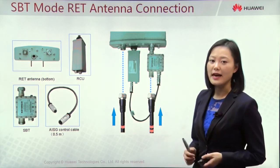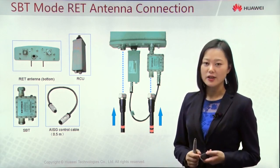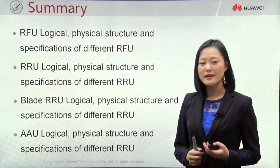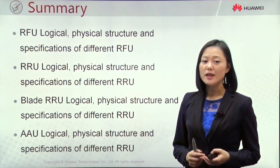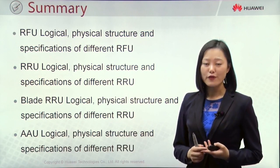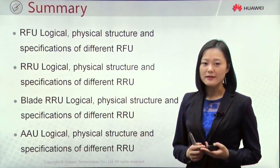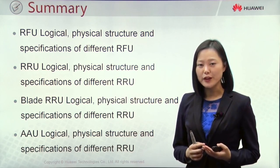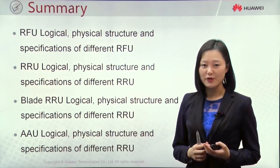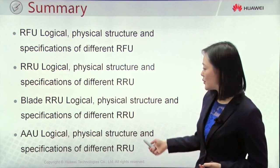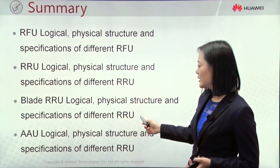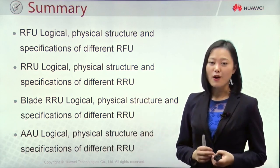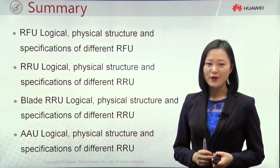For the SBT mode RET antenna connection, the RET antenna bottom has three ports: two for antenna and feeder connection, and one for RCU. An AISG control cable connects one side to the RCU and the other side to the smart BiST. The smart BiST has one port connected to the antenna and another to the feeder. That concludes our summary of this chapter: we introduced the RFU, RRU, Blade RRU, and AAU — covering logical and physical structures, specifications, and application scenarios. Thanks for your time.